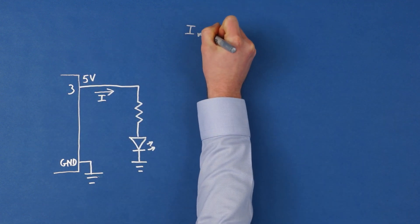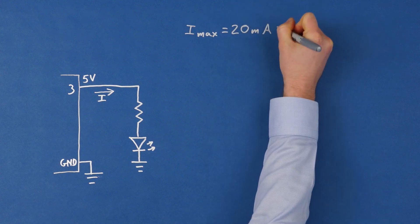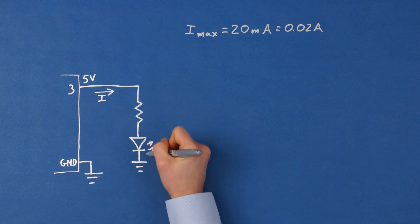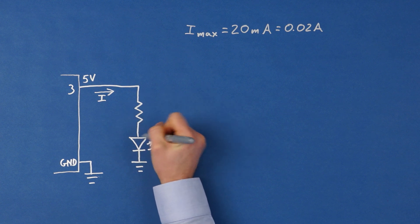Most basic LEDs can have a maximum of 20 milliamps, or 0.02 amps, flowing through them before they get damaged. We know that the current flowing through the LED must be the same current flowing through the resistor as this is a series circuit.